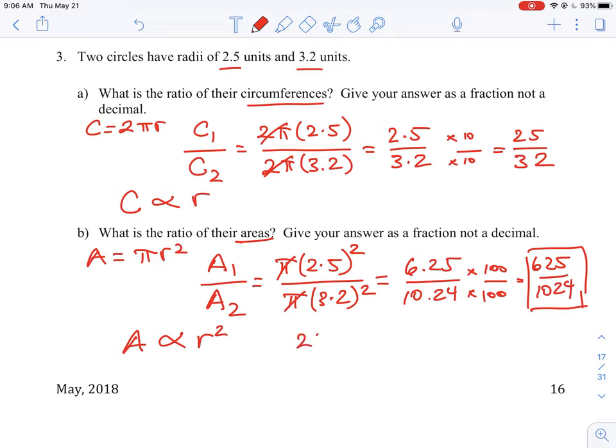So we could have just gone and taken the ratio of those two radiuses and squared them, and you would get the same answer as the method we did above.